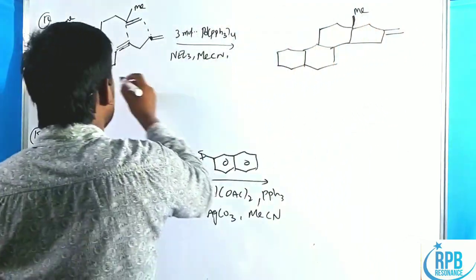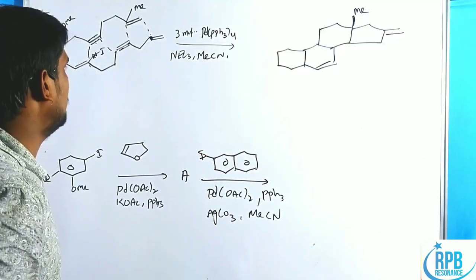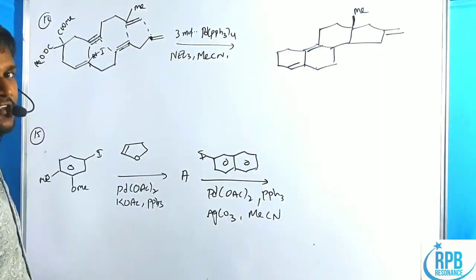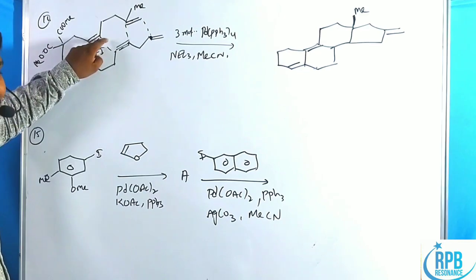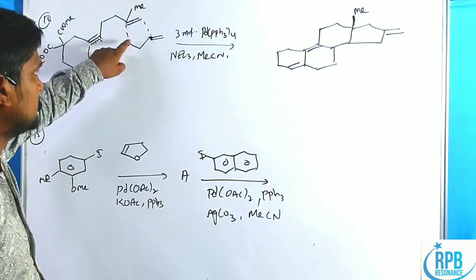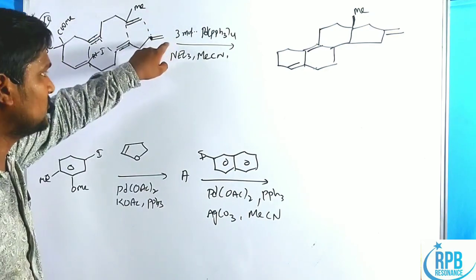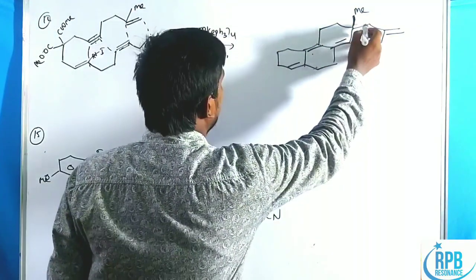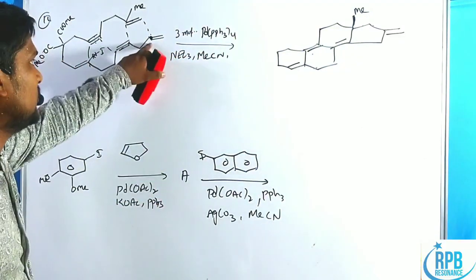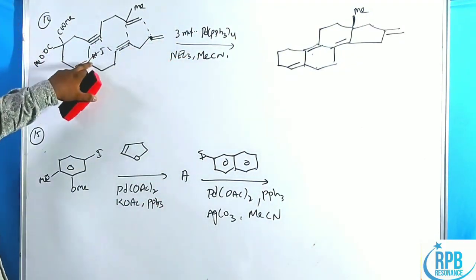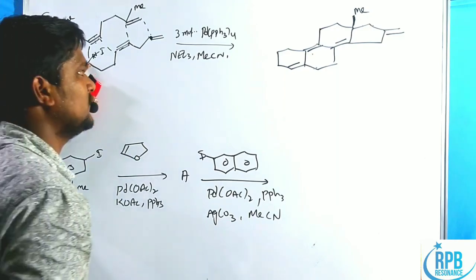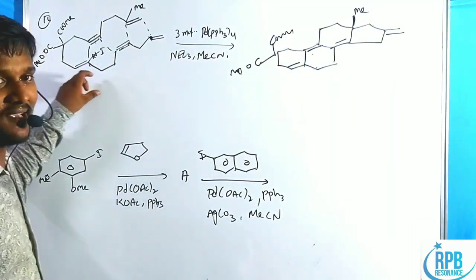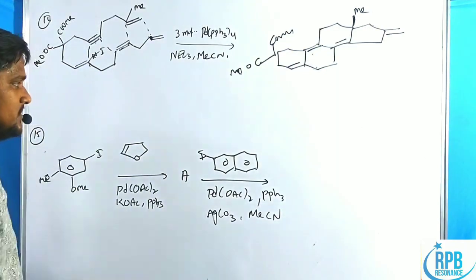This cascade intramolecular cyclization without beta-hydride elimination is a very interesting method to create steroidal structures. The double bonds form at specific positions through this chain reaction: each negative charge pushes the next bond formation, generating a polycyclic steroidal framework with an angular methyl group and defined double bond positions.